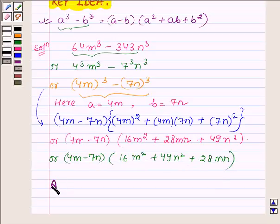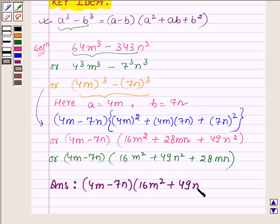Thus, on factorizing we get (4m - 7n)(16m² + 49n² + 28mn).